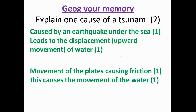The second mark is something to do with the movement of your water, the movement of the tectonic plate, or something to do with friction as to why this causes a tsunami. For example, it's caused by an earthquake under the sea which leads to the displacement or the upward movement of water. You could also get there by talking about the movement of tectonic plates causing friction, which causes the movement of the water. You need to link that back to the movement or displacement of your water as a result of your earthquake or tectonic plate movement.